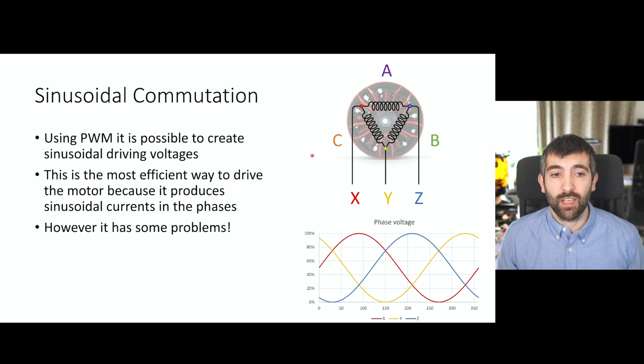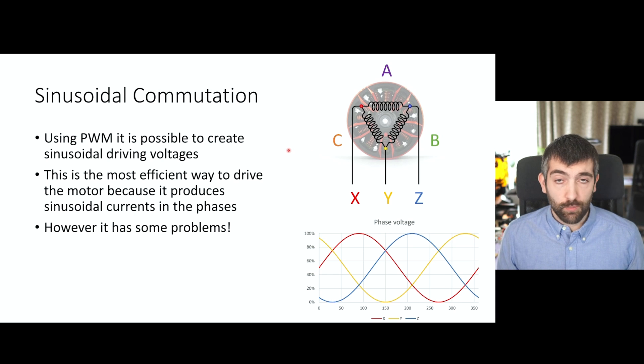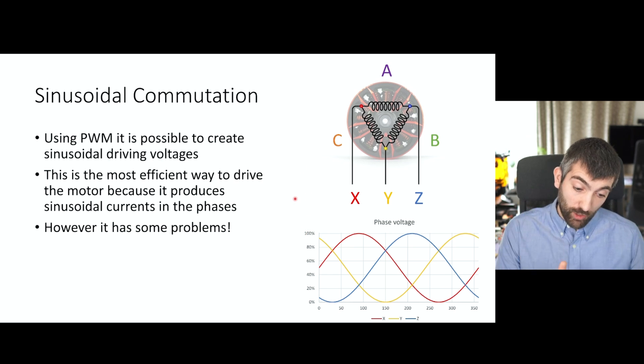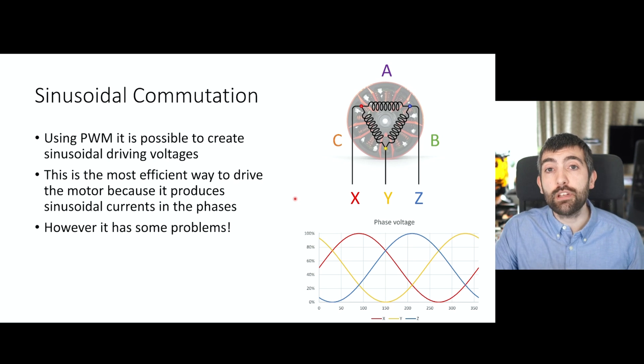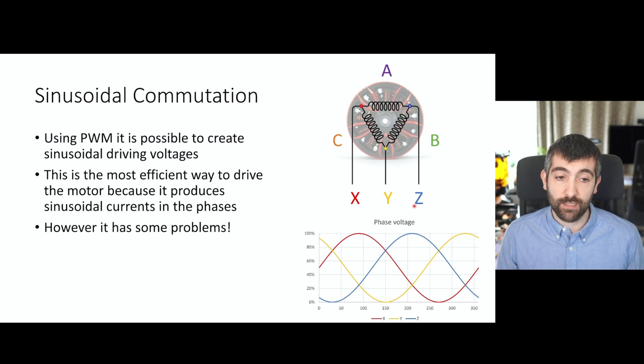Sinusoidal commutation is another way to drive a motor and it alleviates some of the issues with block commutation. If we're using a PWM drive, which we are for all of our FPV ESCs, then using PWM it is possible to create sinusoidal driving voltages. So rather than just driving the phase fully on or fully off, you actually vary the drive voltage on each of those terminals X, Y, and Z in a sinusoidal way to get a sinusoidal voltage across each of the phases A, B, and C. And this is the most efficient and the smoothest way to drive a motor because it provides exactly the right shape of driving current that matches the back EMF. So we know the motor wants to accept a sinusoidal driving current and you're giving it one.